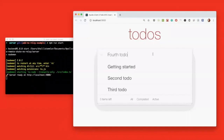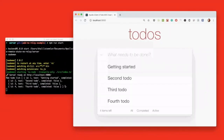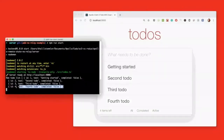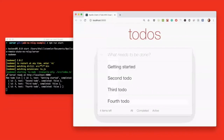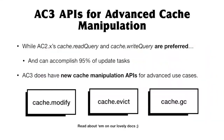And voilà — there it is. Our to-do is not only saved on the back-end server, it's also being displayed and re-rendered on the client side. Looking at the cache again, we can confirm that the fourth to-do is also in our cached collection of to-dos. When writing update logic, we generally recommend using the readQuery and writeQuery APIs — these can accomplish about 95% of what you'll ever need.